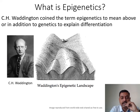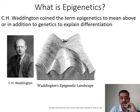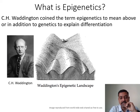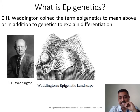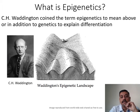Conrad Waddington, a British embryologist, was the first to lay the foundation for the epigenetics field. He coined the term 'epigenetics,' meaning 'above or in addition to genetics,' to explain differentiation. He used a familiar analogy called the epigenetic landscape, describing marbles that roll across a landscape and can enter any of the grooves.